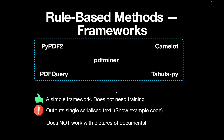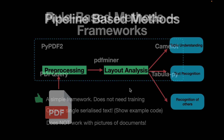The main advantage of rule-based methods is their simplicity — they can extract text quickly from a given PDF. But one of the drawbacks is that the output is serialized text; in most cases it doesn't preserve the structure of the document, and it does not work with pictures of documents. If you take a picture of a document, convert it to PDF, and feed it into one of these frameworks, it won't do a very good job of extracting the text.